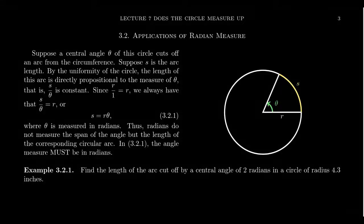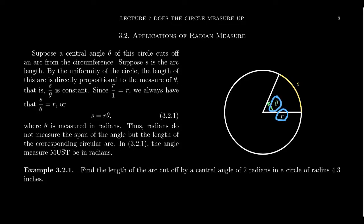Suppose we have a central angle theta inside of a circle that cuts off some proportion of the circumference. We see some arc right here, let's say the length of that arc is equal to s. It is a circle which specifies the radius, the radius here we'll call it r, and then the radian measure of this angle we're going to call that theta.